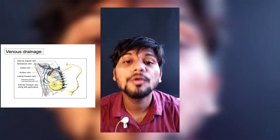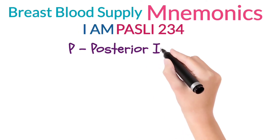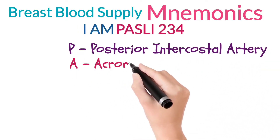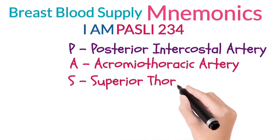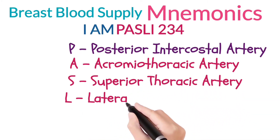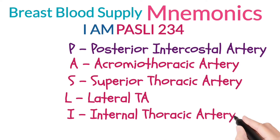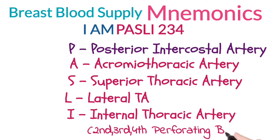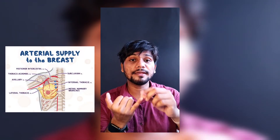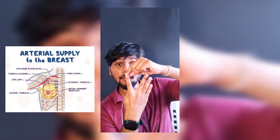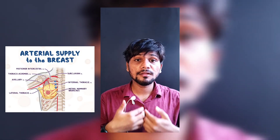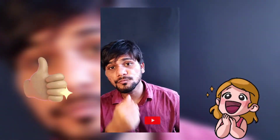'I AM' covers the veins, and 'PARSLEY 2-3-4' covers the arteries. P stands for the posterior intercostal artery, A stands for the acromiothoracic artery, R/S stands for the superior thoracic artery, L stands for the lateral thoracic artery, E/Y stands for the internal thoracic artery, and 2-3-4 stands for the second, third, and fourth perforating branches of the internal thoracic artery.